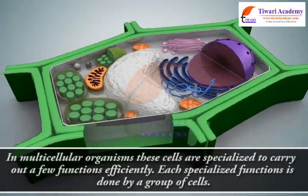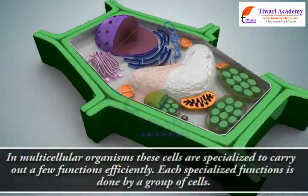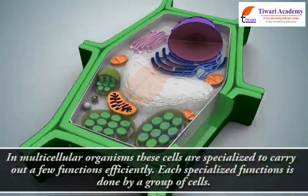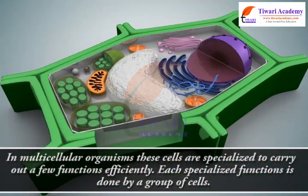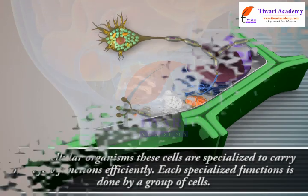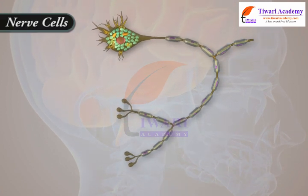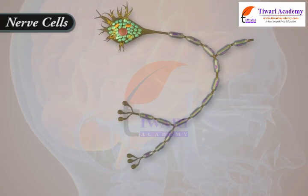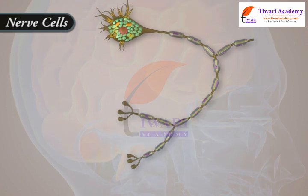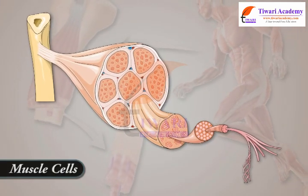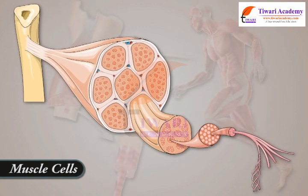In multicellular organisms, cells are specialized to carry out a few functions efficiently. Each specialized function is done by a group of cells. For example, nerve cells carry messages from the brain to every part of the body.